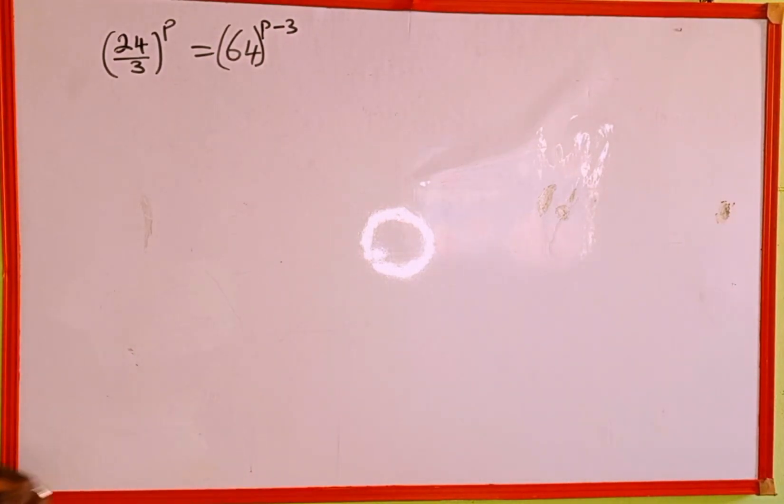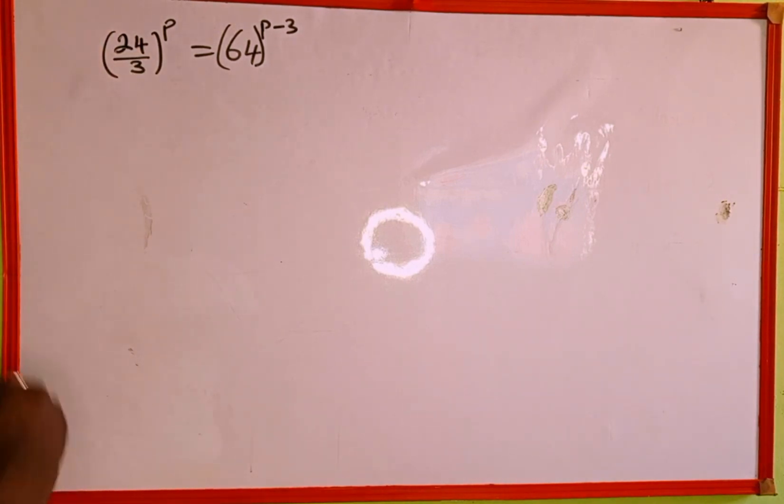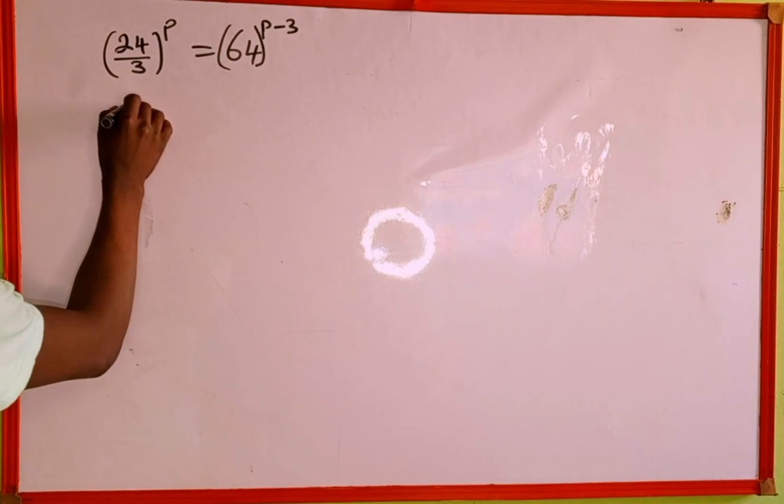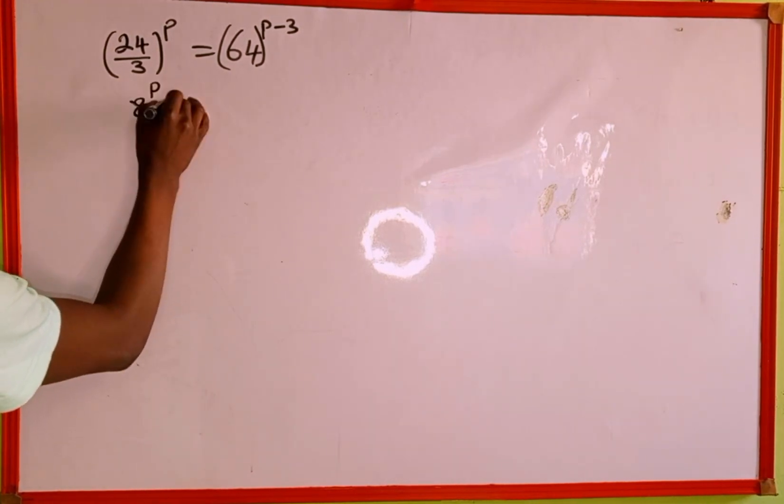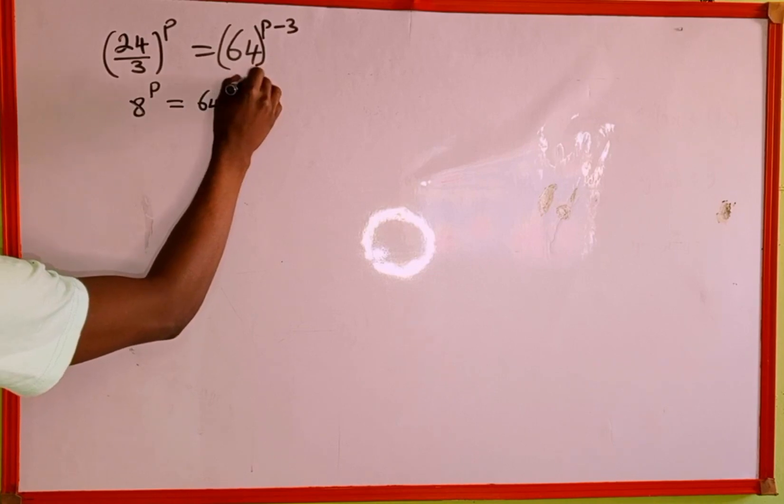So let's get started. The first thing we're going to do: 24 divided by 3, since 3 can go into 24 eight times, gives us 8 to the power of p, which equals 64 to the power of p minus 3.